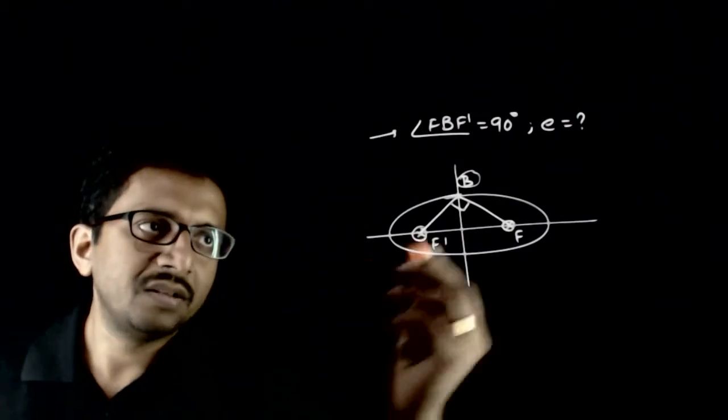How can you convert this into mathematical property? If this angle is equal to 90, by symmetry, this angle is 45 degrees, this is 90, this is also equal to 45 degrees.